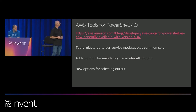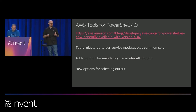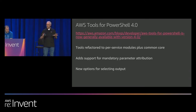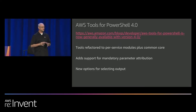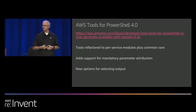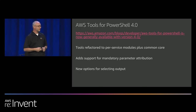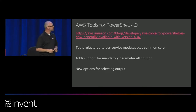Even more exciting, we have a new version of our tools for PowerShell, version 4. We've taken those monolithic modules and broken them apart, factoring them into per-service modules. Now you only need to download the modules for the services you want to work with in PowerShell, including if you're writing Lambda functions in PowerShell. It's a great speed improvement. We've also added support for mandatory parameters, which has been a long-requested feature. If you are a PowerShell tools user, run, don't walk, to get this.